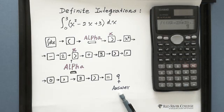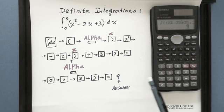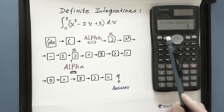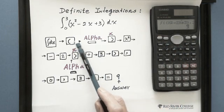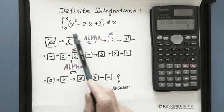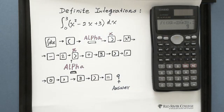So this is the function. This shows you how to use the Casio FX-991MS to find the definite integral of a function. Thank you.